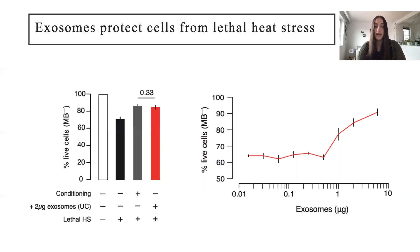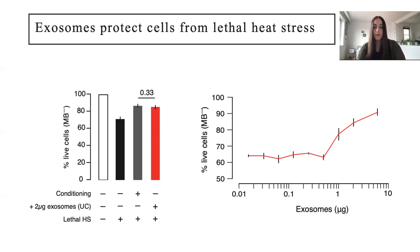To show that this factor was exosomes, I conducted a similar experiment. I conditioned a yeast culture at 42 degrees again, then isolated the exosomes released from cells. I found that these conditioned exosomes protected naive cells from lethal heat stress, seen in the red bar, significantly more than the naive cells that did not receive exosomes, the black bar. This suggested that inducing exosome release and chaperone production through conditioning promotes cell survival against lethal heat stress. I also found that this effect was dose dependent, with more exosomes conferring greater protection.